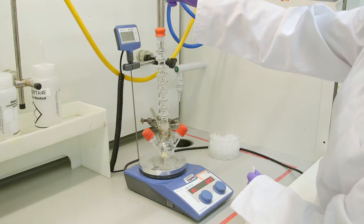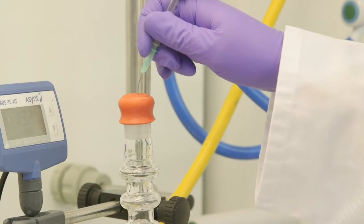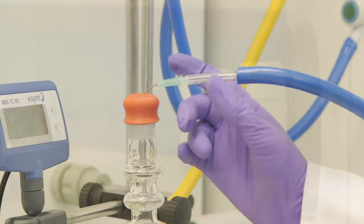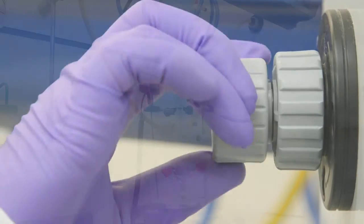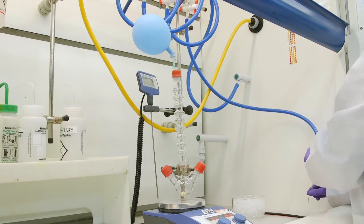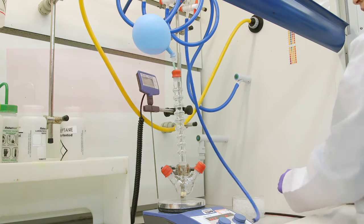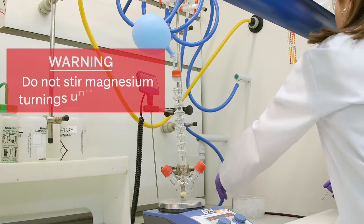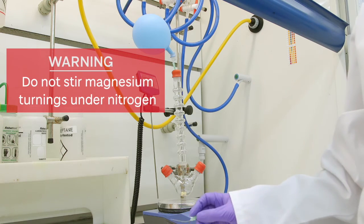Now we will evacuate the air from the flask by attaching a vacuum line to the flask. We will then use our nitrogen balloon to create the nitrogen atmosphere. Remember it is important not to be stirring the magnesium turnings under nitrogen.